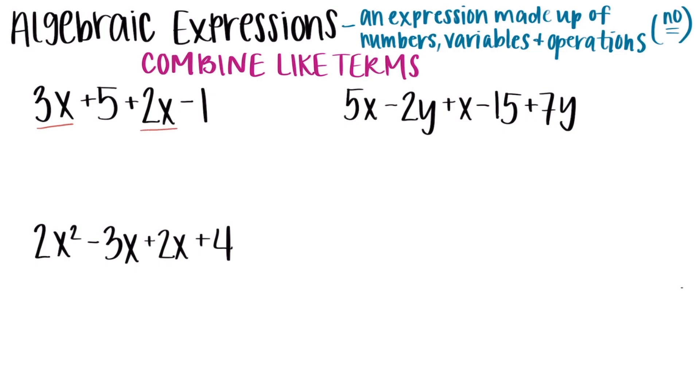But starting with our first example here, to simplify, you can only put together things that look the same. So for example, 3x, I cannot combine that with 5 or negative 1 because they don't have x's. So I can combine my 3x and 2x, add up the numbers to get 5x, and then I can combine my constants, a positive 5 and a negative 1 to get positive 4.